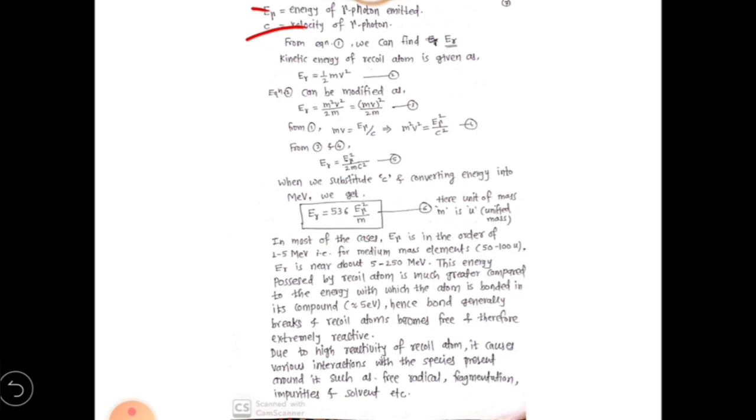From equation 1, now we have to find the value of E_r—that is, the energy of recoil atom. Once the recoil atom is being formed, it possesses only energy called kinetic energy. Therefore, the kinetic energy of that recoil atom is given as: according to classical physics, E_r = ½mv^2, which is given as equation number 2.